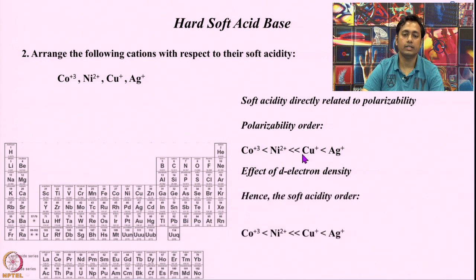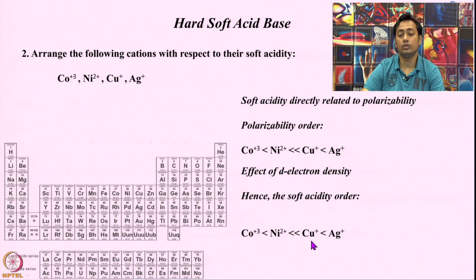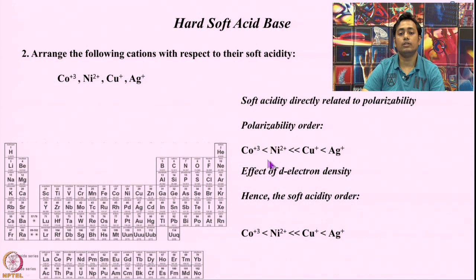This trend follows for acidity as well: Ag⁺ will be the softest acid, then Cu⁺, which also shows a very good amount of soft nature. Whereas the high-charge-density systems — Co³⁺ and Ni²⁺ — will be more on the harder side, making them hard acids with pretty weak soft nature.